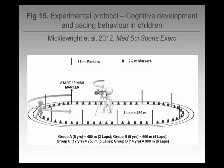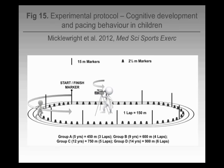What we did was get children of lots of different ages — as young as five, as old as 14 — and we time-corrected the distance they were asked to run so it would take roughly three minutes. Five-year-olds roughly took three minutes to run 450 metres, 14-year-olds roughly 900 metres in three minutes. We videoed it to get the pacing, and had them do a number of common cognitive tasks.